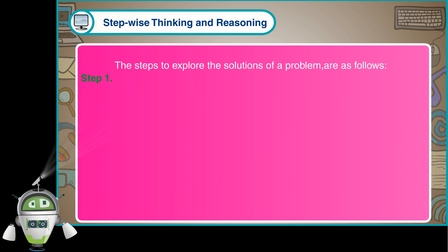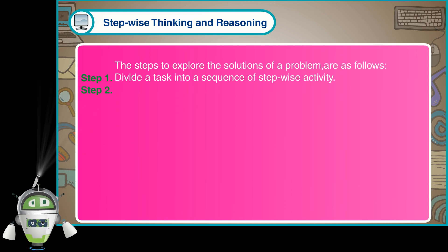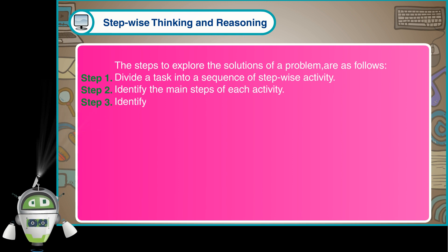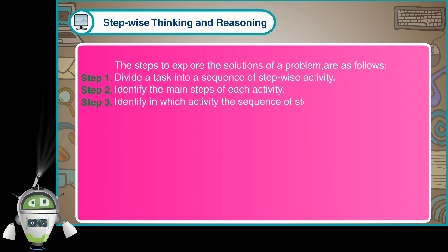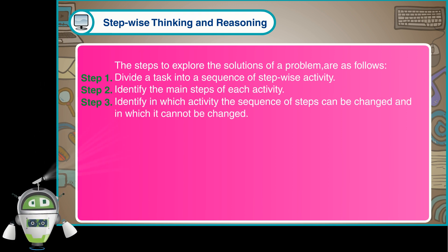Step 1: Divide a task into a sequence of step-wise activity. Step 2: Identify the main steps of each activity. Step 3: Identify in which activity the sequence of steps can be changed and in which it cannot be changed.